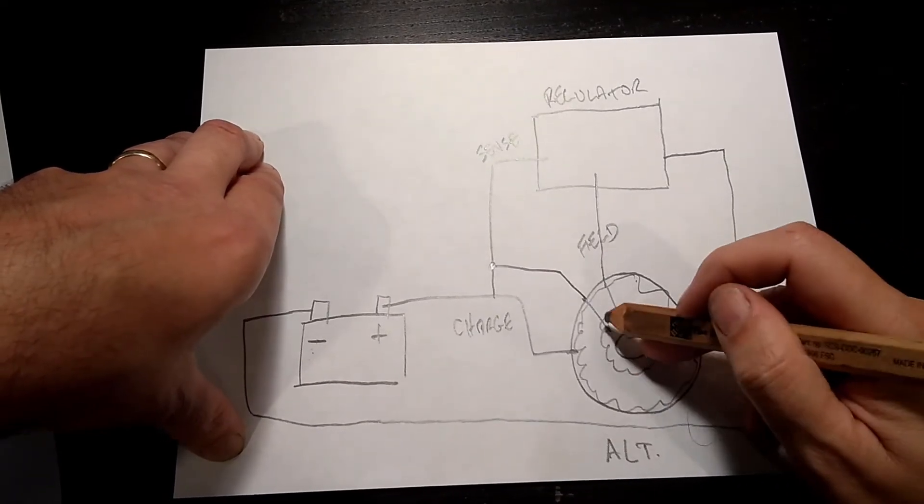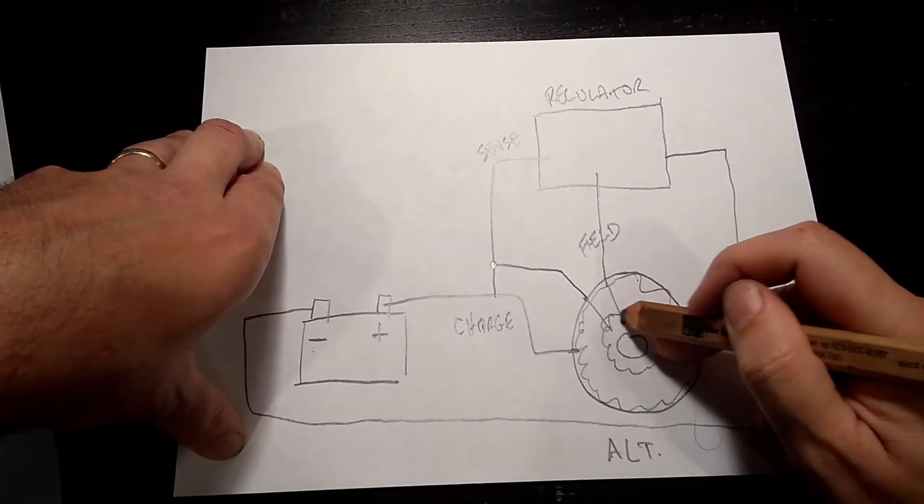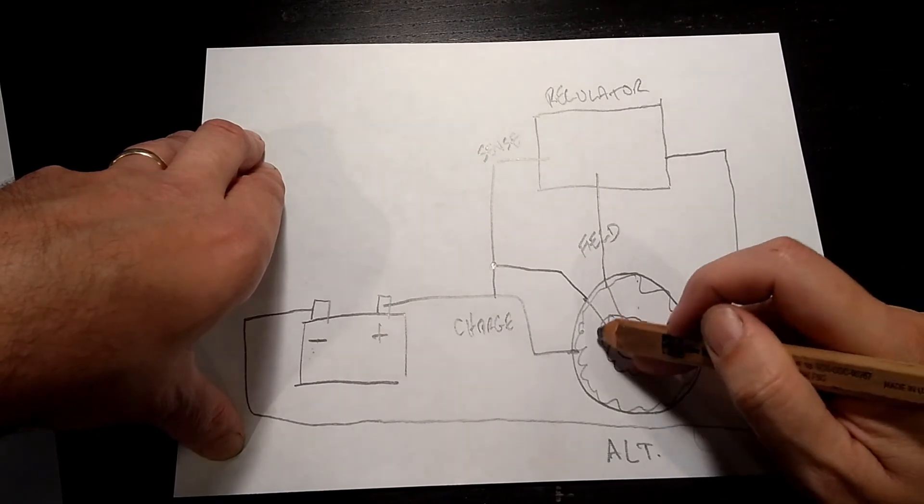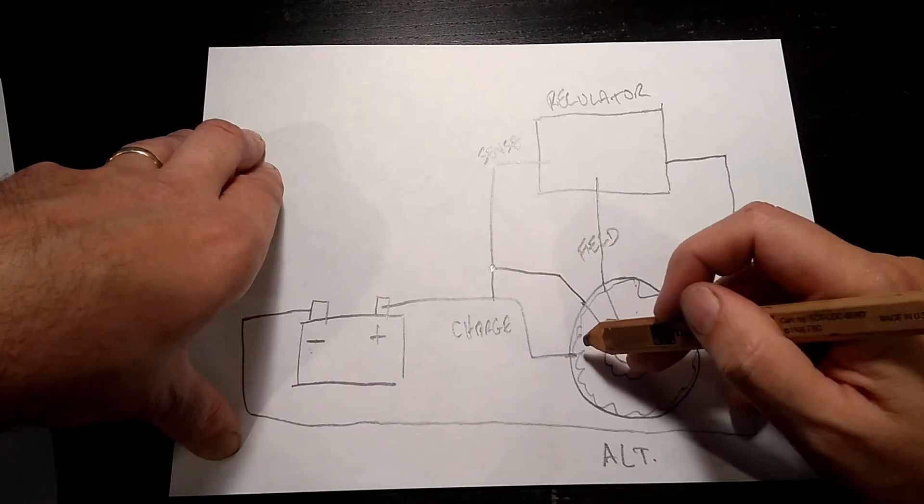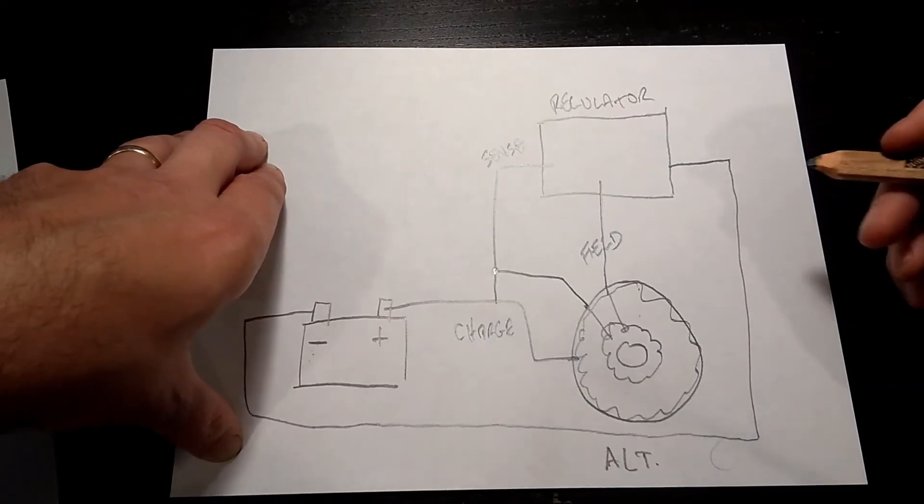When this is spinning, if we run electrical current through this, it becomes a magnet, and this magnet passing these other coils generates electricity. That's all it's doing.